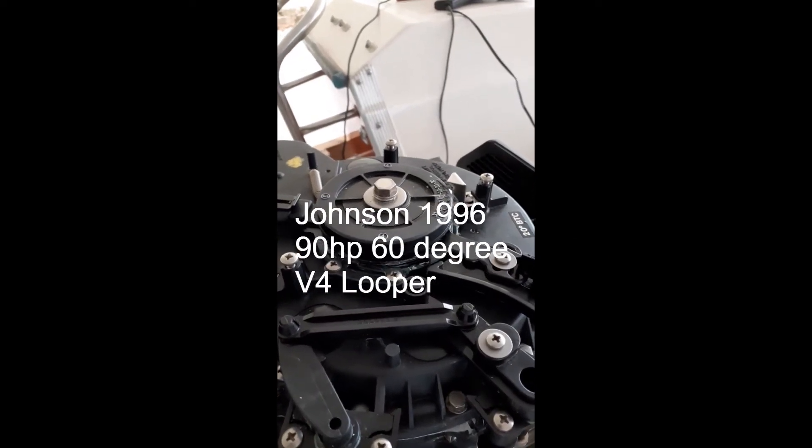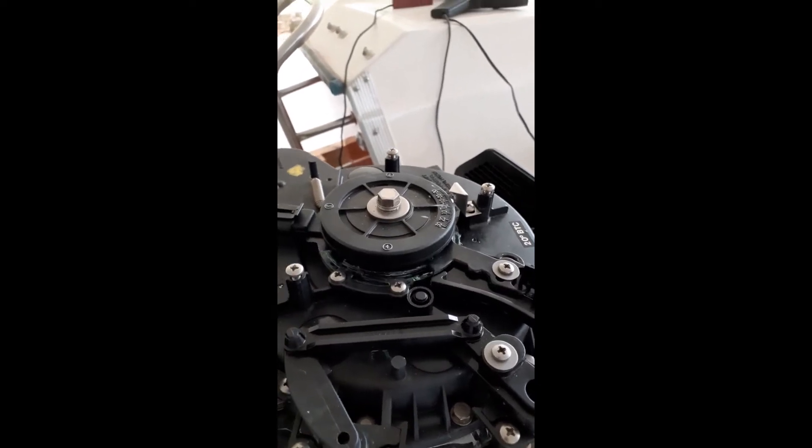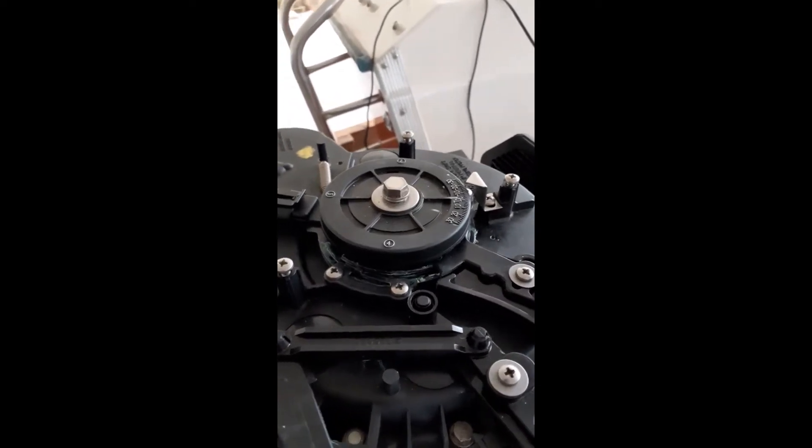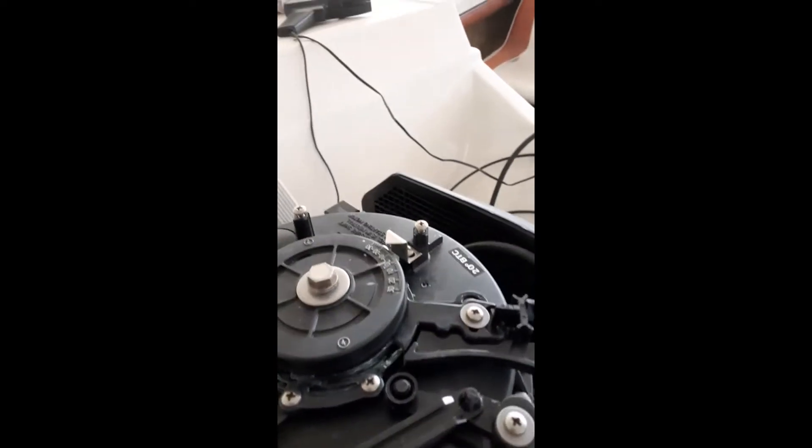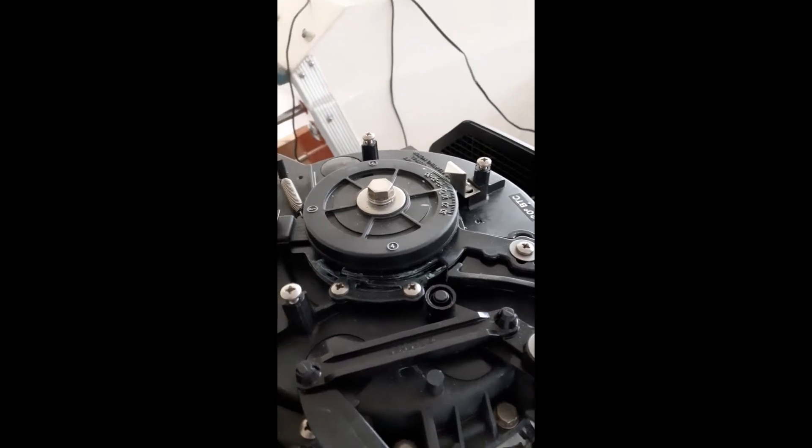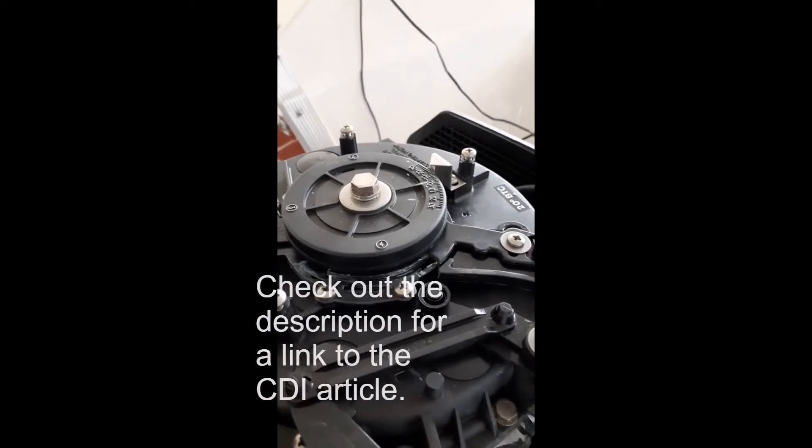This is a quick video on how to do the timing on a V4 60 degree looper engine, Johnson 90 horsepower. I found an article that described what to do but didn't go into how to do it, so I thought I'd do this little video to show.